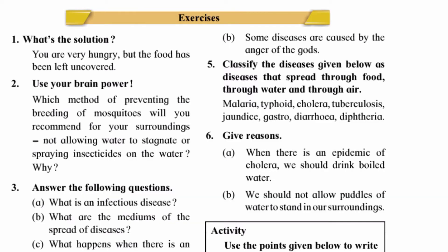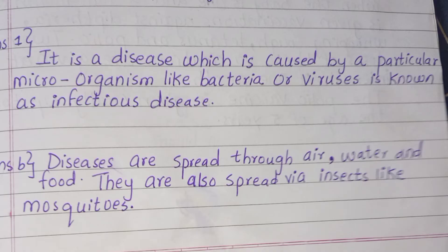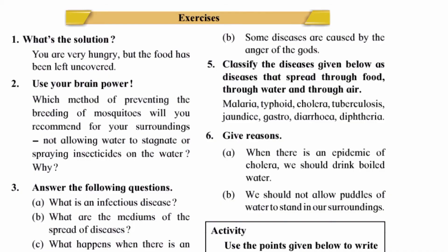Question three — answer the following questions. A: What is an infectious disease? Answer: It is a disease which is caused by particular microorganisms like bacteria or viruses, and is known as an infectious disease.